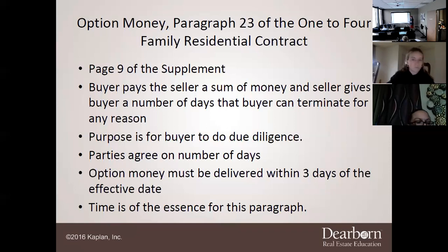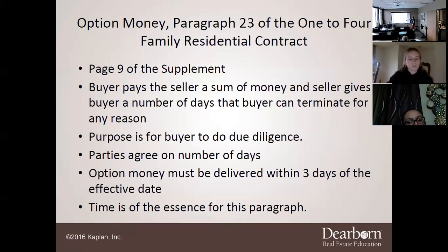The option money must be delivered within three days of the effective date. It used to be much harder because option money went to the seller — so if the buyer was in College Station and the seller was in Katy or Houston, you'd have to take one check to the title company where the property was located in Navasota, and another check to Katy to the seller.